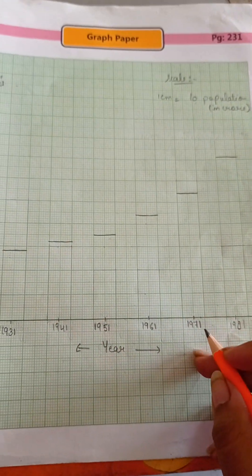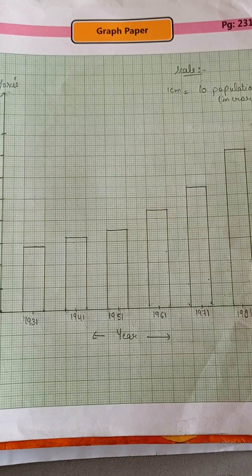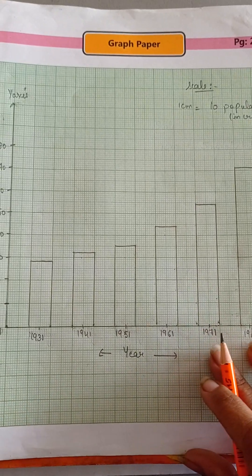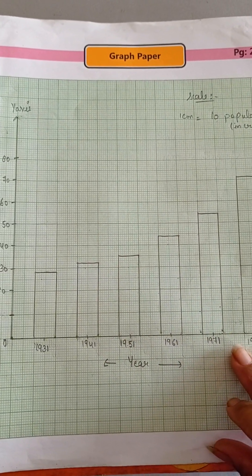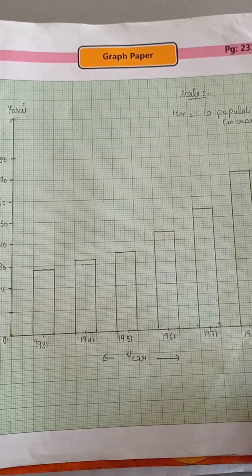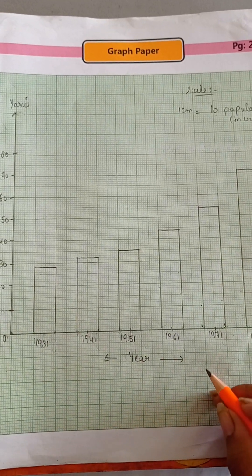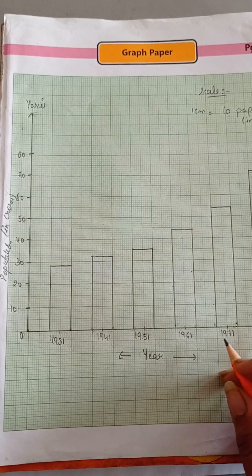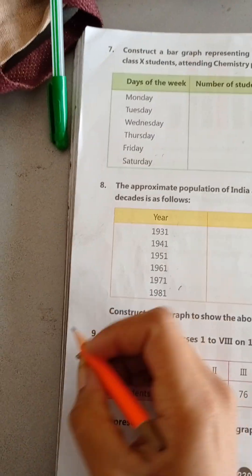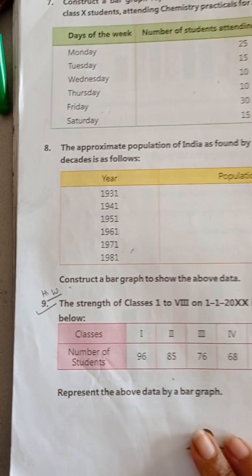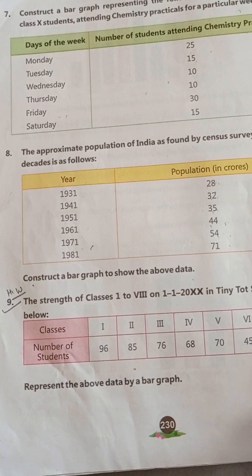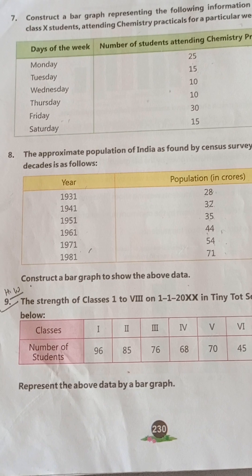Here, bar graph is complete. So this is the bar graph of question number 8. I hope now you all will better understand about the bar graphs. Question number 9 is your homework. You have to do this yourself. Thank you students.